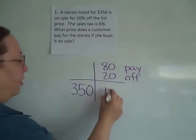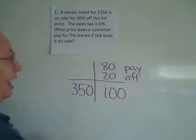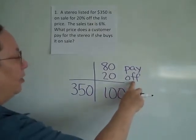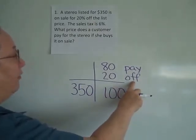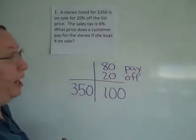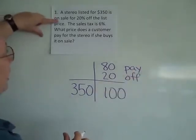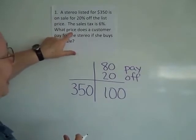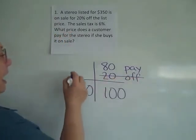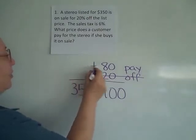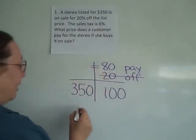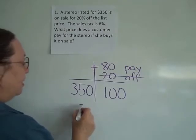The 100 will always go here, and then I have to ask myself which piece do I want. Do I want to know the part I got off, or do I want to know what I paid for it? It says what price will I pay, so the piece I'm looking for is my 80% piece.